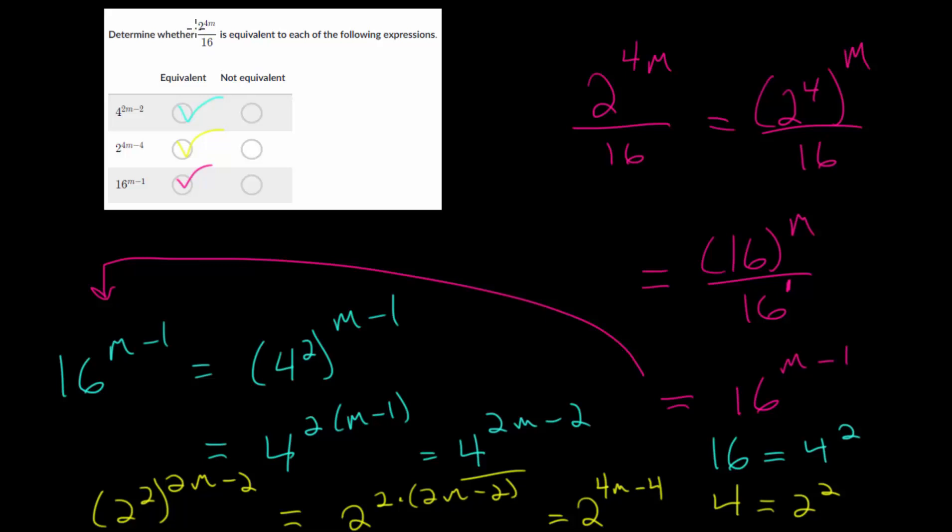Like for instance, 16 is in the bottom, and you have 2 to the 4 times m or 2 to the 4th up top raised to the m power. And so you can see you'd have 16 up top and 16 down below. And that's a way to simplify. So with experience, you will start noticing patterns like that.